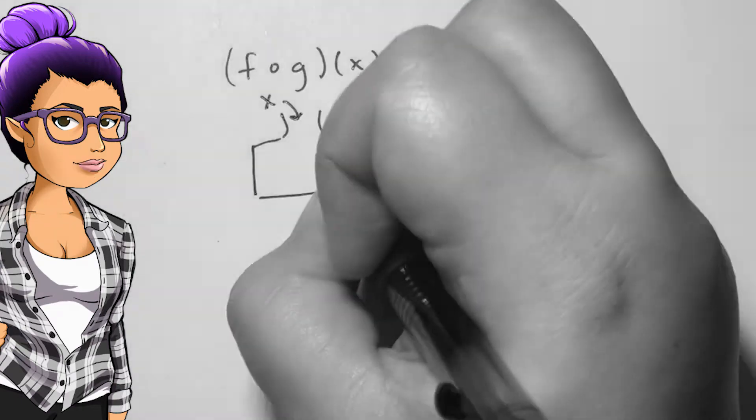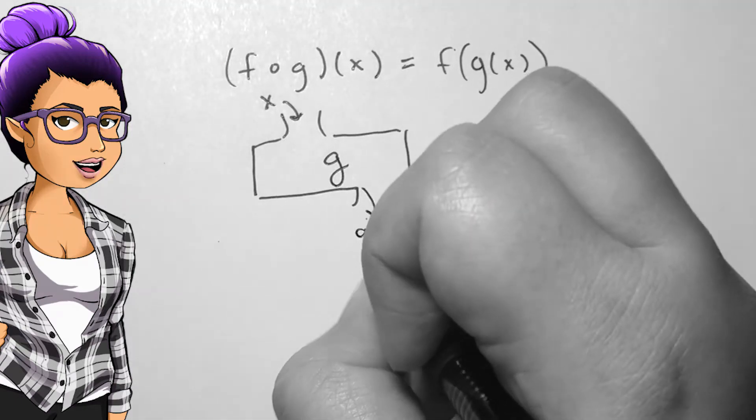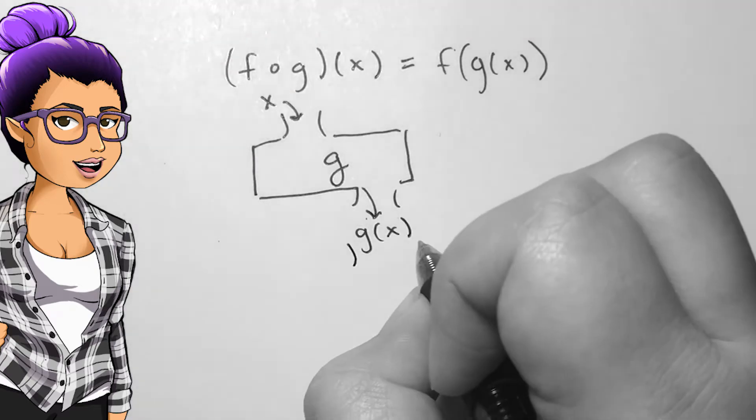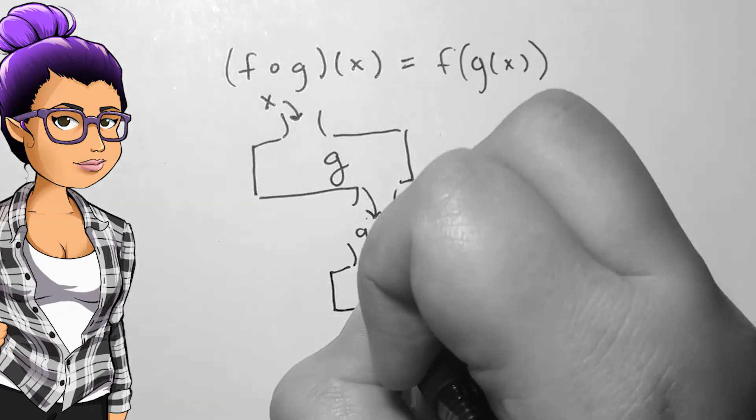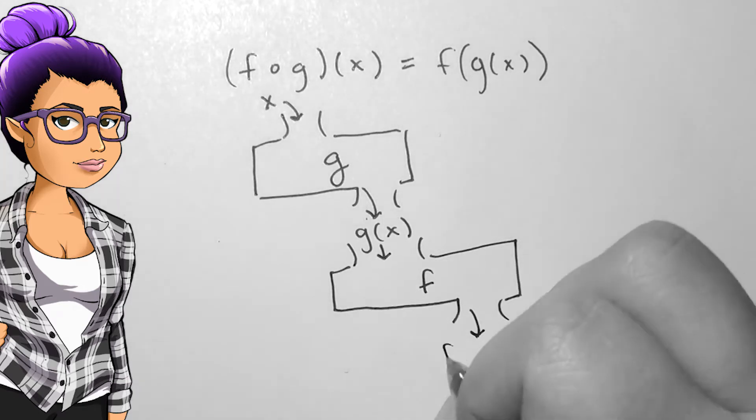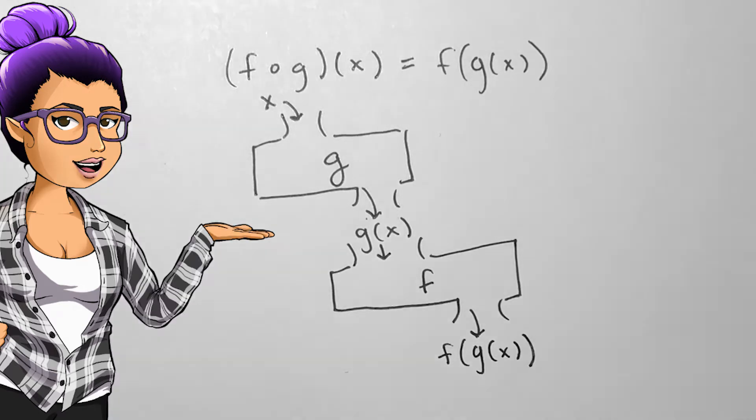In the video defining a function, we discussed a machine. The composition of two functions is like two machines. An ingredient goes into the first machine, creates an item, and this item becomes an ingredient in another machine, and the second machine creates another item.